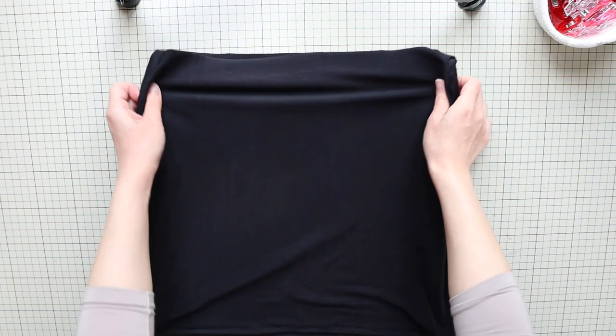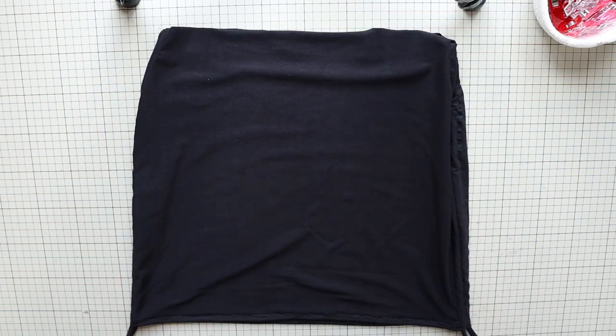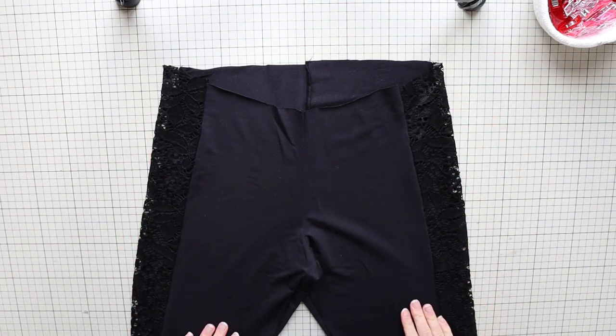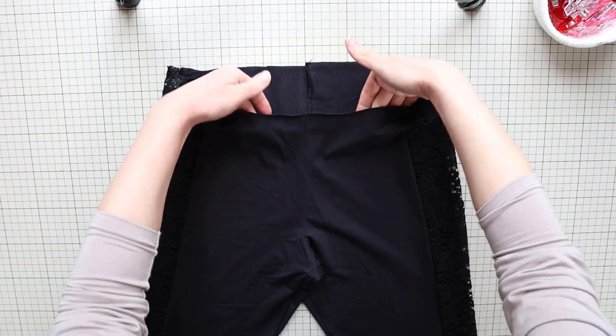You can just finish up the top edge and wear it as is. But here I'm going to attach the skirt to my pants. So remove the waistband of your pants or if you're making a pair from scratch, don't attach the waistband.